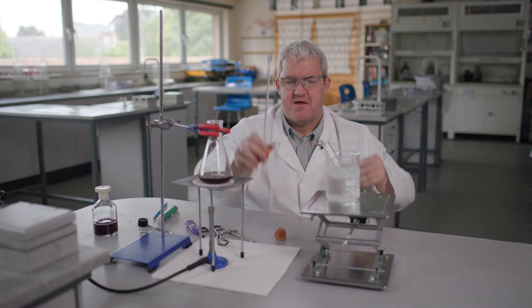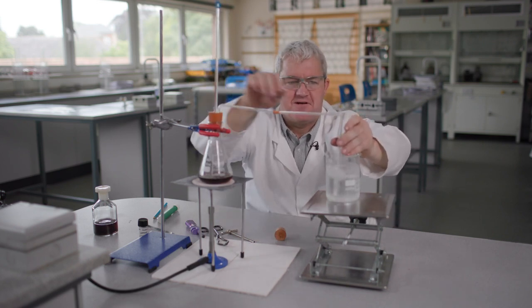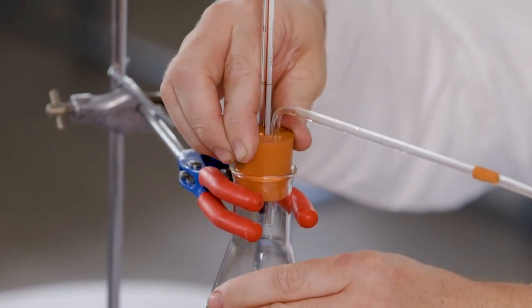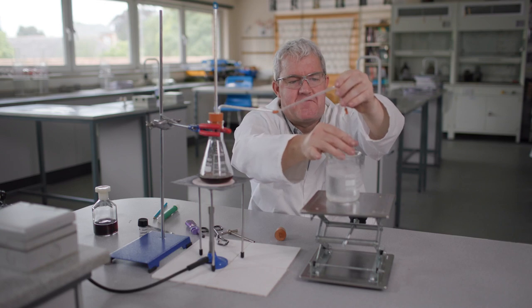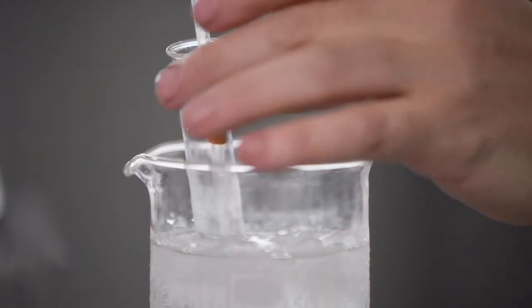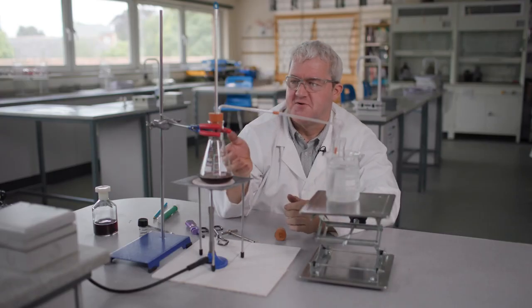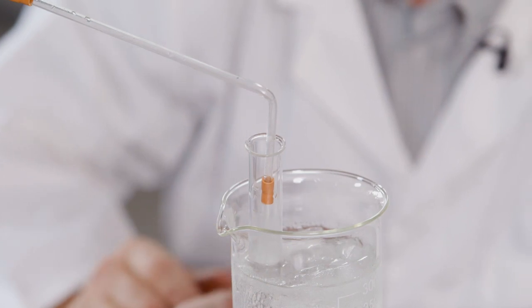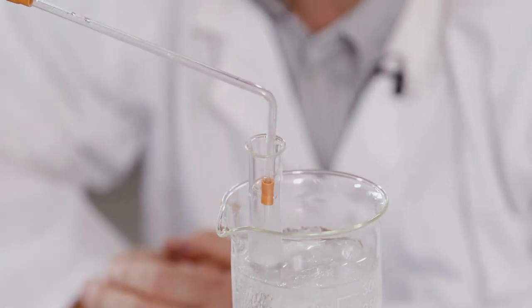We can now put in the thermometer, bung delivery tube apparatus and push it in nice and snugly. Notice at the other end here we have the delivery tube going into a test tube and the test tube is in an ice bath. That way when the water boils it will condense in the tube and will continue to be condensed in the test tube.